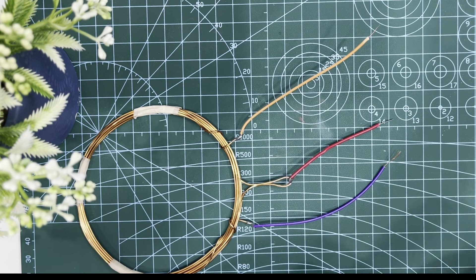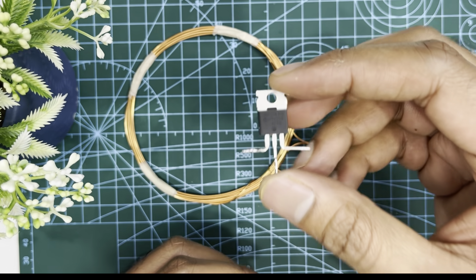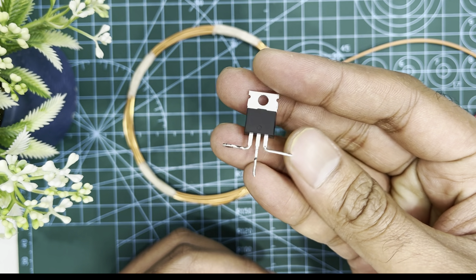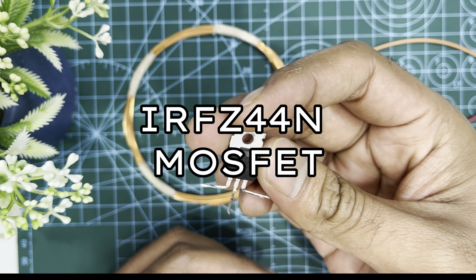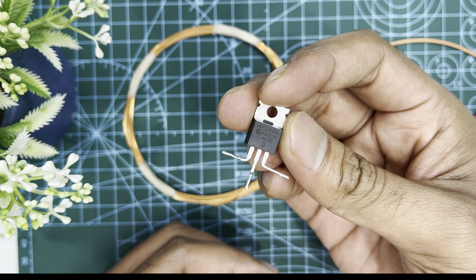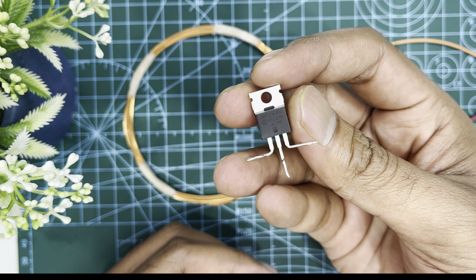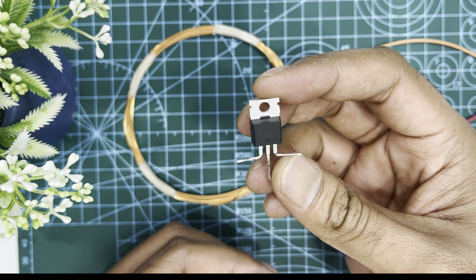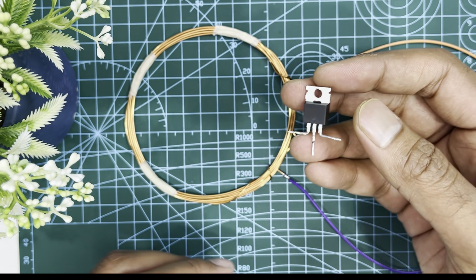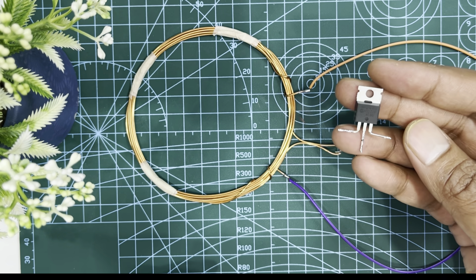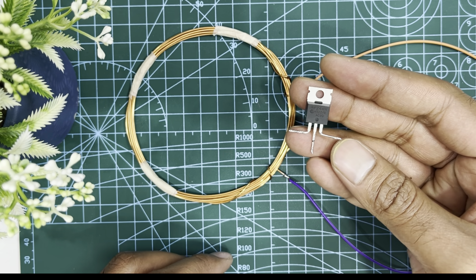The next component I need is a transistor. Here I will use an IRF-Z44N MOSFET. This is one of the most popular MOSFETs you can easily find in the market. This MOSFET is best known for its use in high drain current circuits and works well for switching circuits.